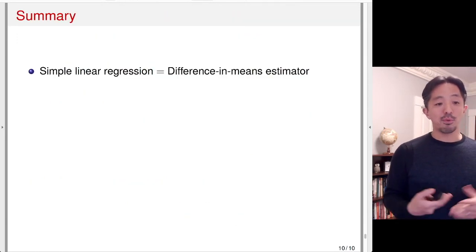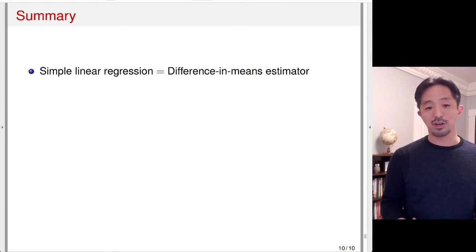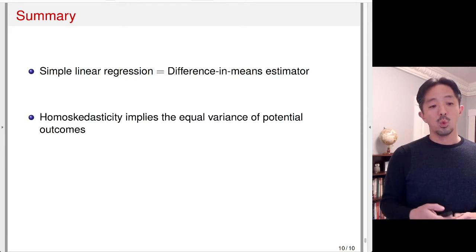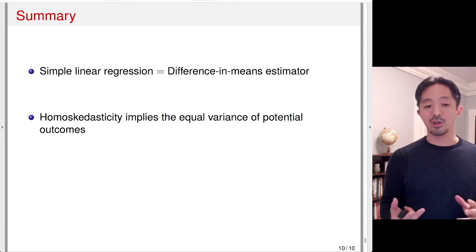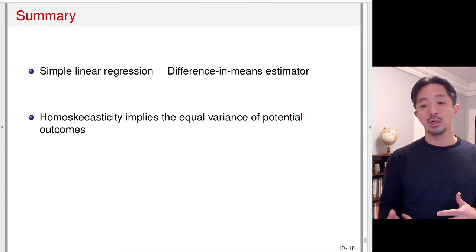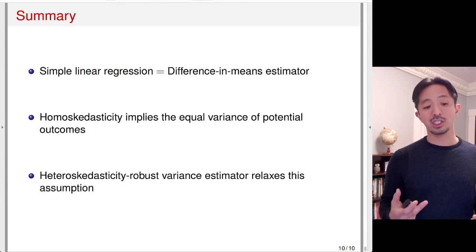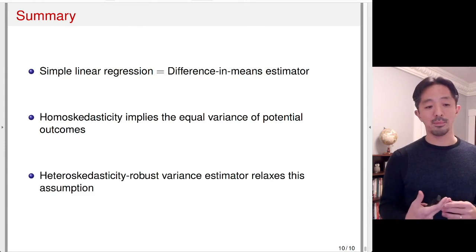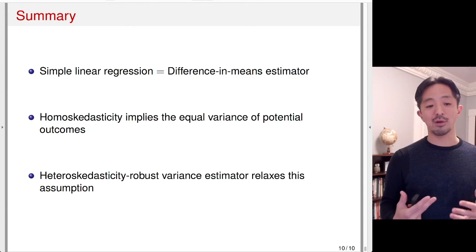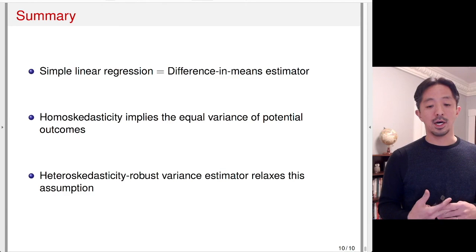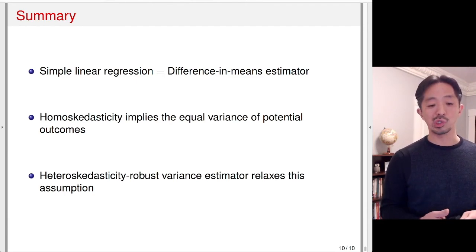To summarize: simple linear regression is identical to the difference-in-means estimator — the coefficient on the treatment variable equals the difference-in-means estimate. Homoskedasticity in linear regression implies equal variance of potential outcomes (variance of Y(1) equals variance of Y(0)), which holds under constant additive treatment effects but is likely violated with treatment effect heterogeneity. The heteroskedasticity-robust variance estimator fixes this by allowing different variances, and HC2 is identical to Neyman's variance estimator and is widely used in applied research.